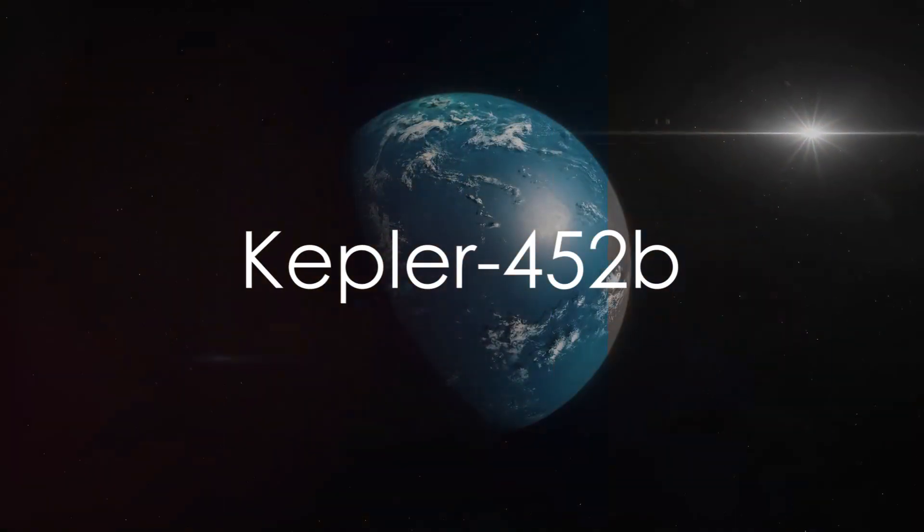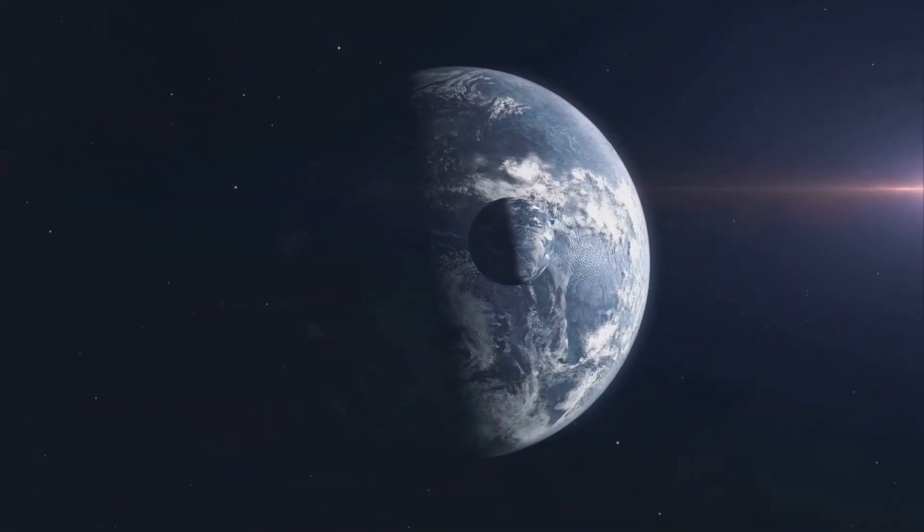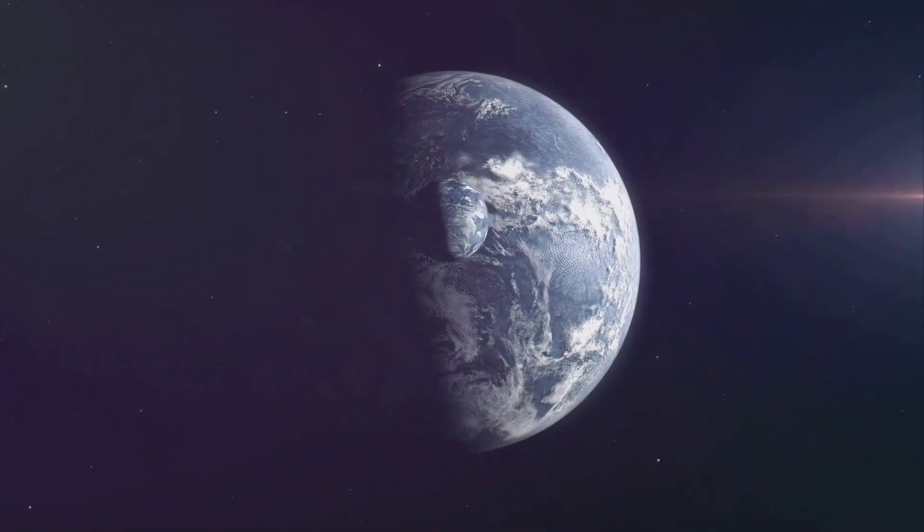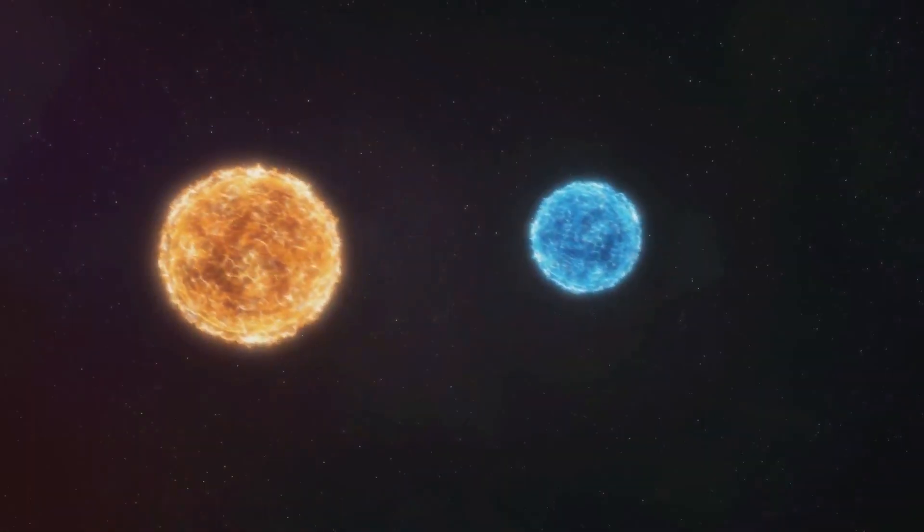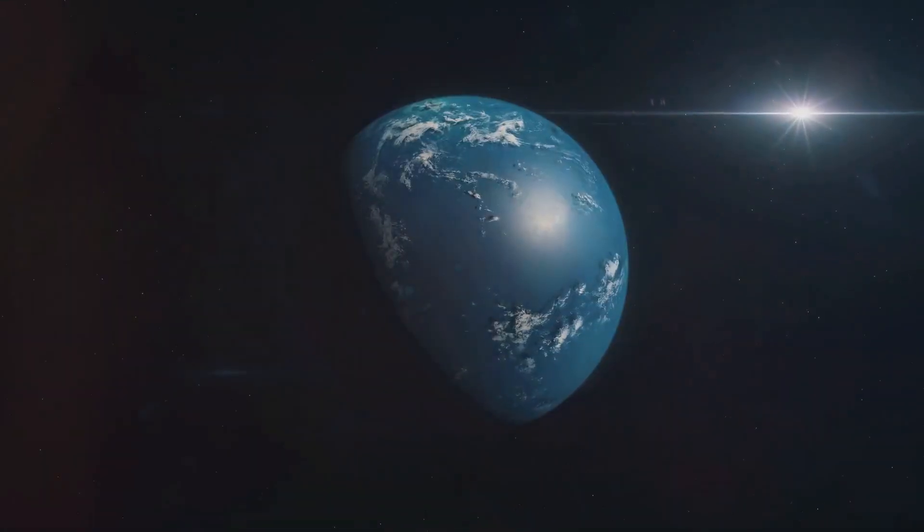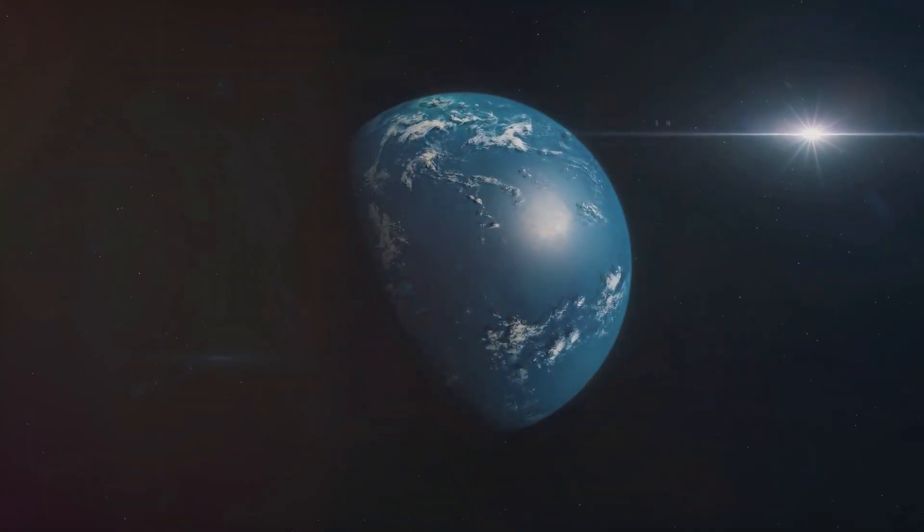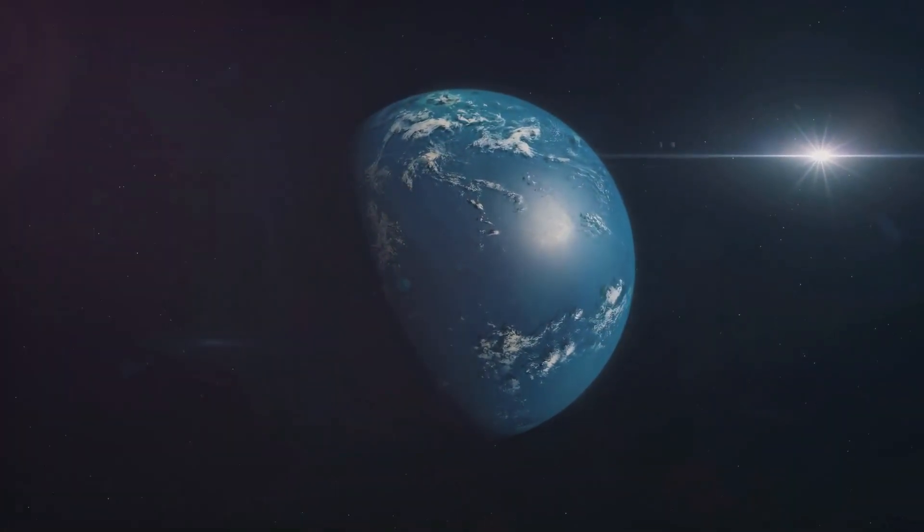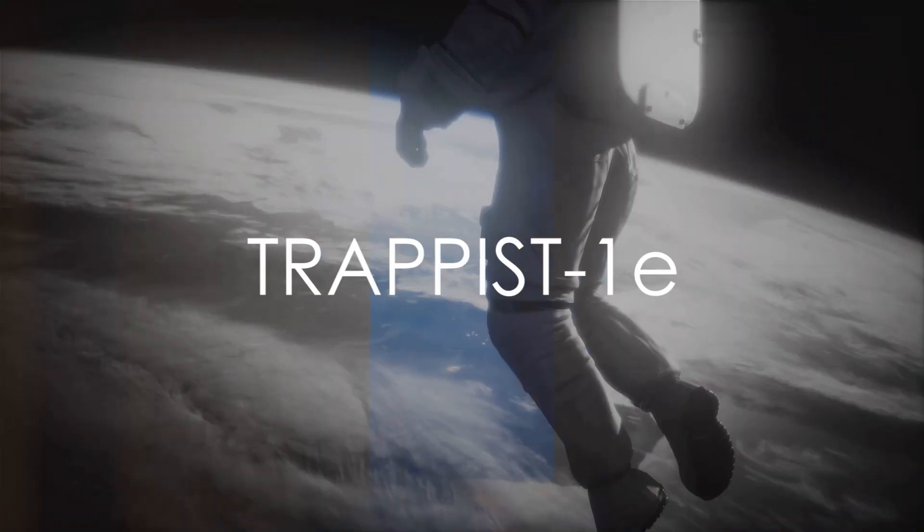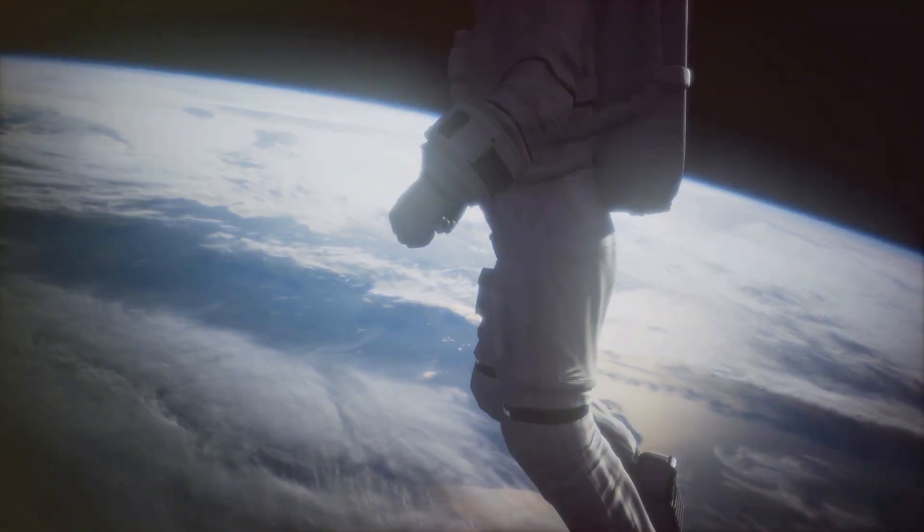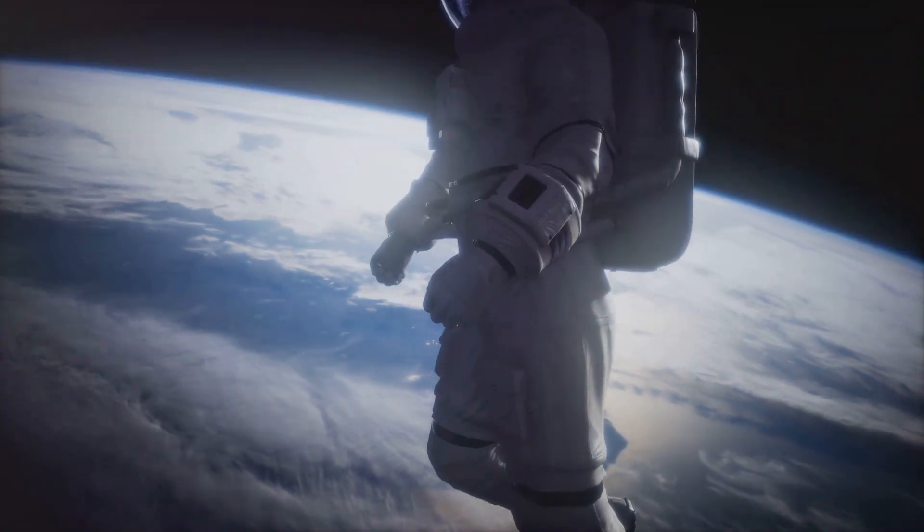It's the first planet of its size found to orbit within this zone, making it a significant discovery in the search for extraterrestrial life. Moving on to number five, we have Kepler 452b. This exoplanet is about 60% larger than Earth and orbits in the habitable zone of a star similar to our own sun. Its existence raises the possibility of a rocky world with conditions similar to Earth.